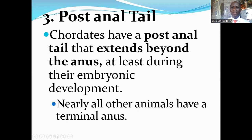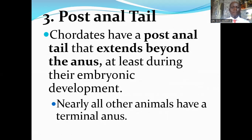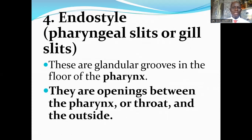The amphibians in the order Anura — actually frogs and toads — actually lose their post-anal tail as adults. But as juveniles, the tadpoles possess a post-anal tail, a tail that extends beyond the anus. Nearly all other animals have a terminal anus. Like the earthworms, they have an anus that is at the tip of the tail, and even the nematodes and others. So that's one basic difference between the chordates and the other animals.